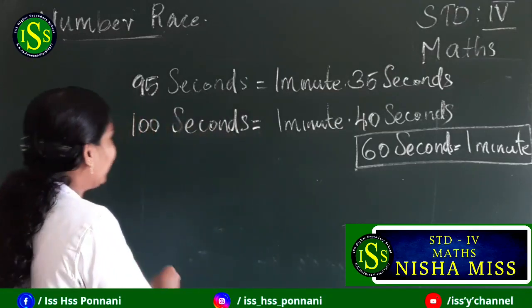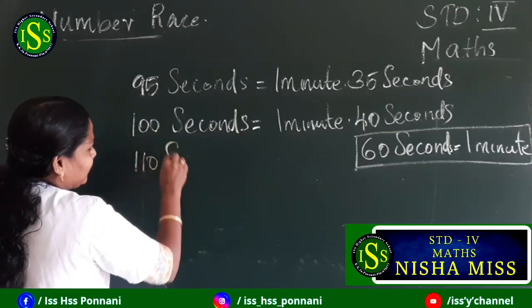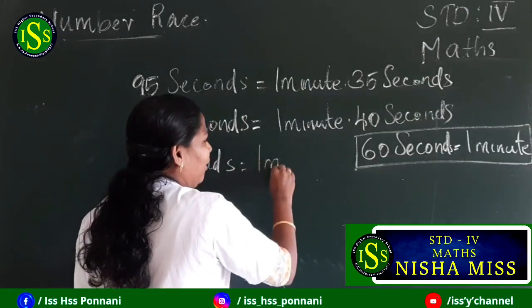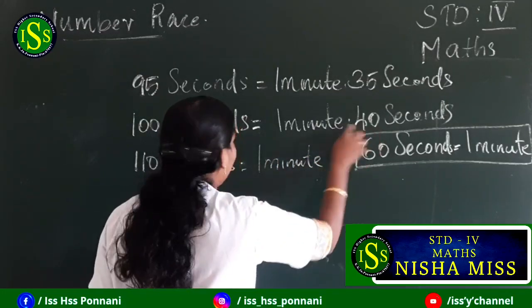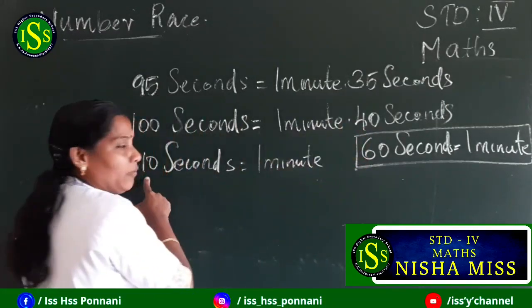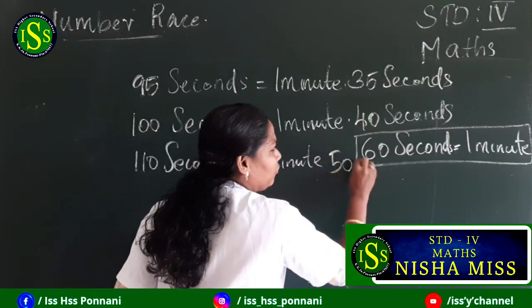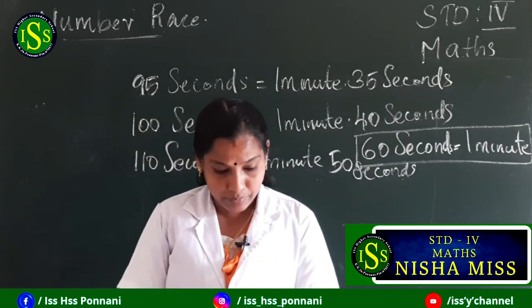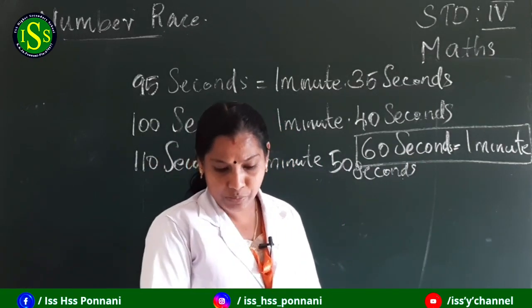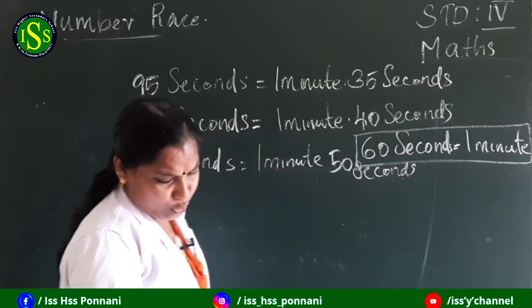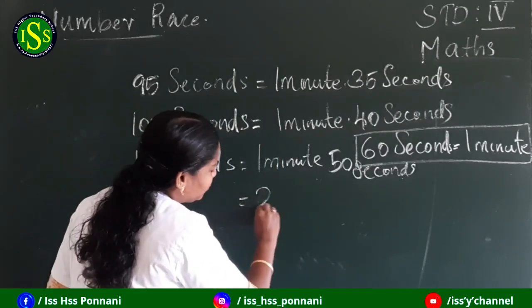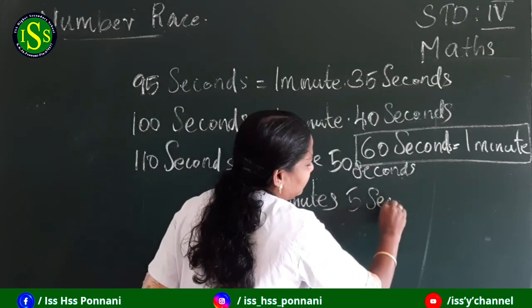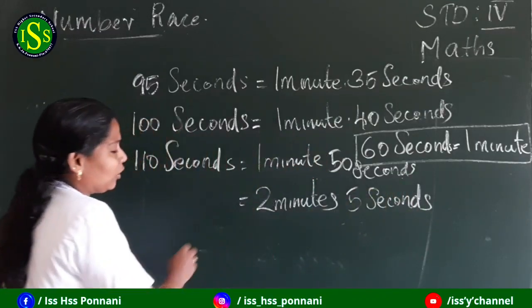Next: 110 seconds. 1 minute is 60 seconds. What is the balance? 110 minus 60 is 50 seconds. So 110 seconds equals 1 minute 50 seconds.